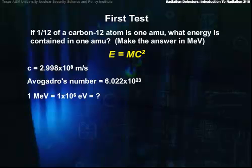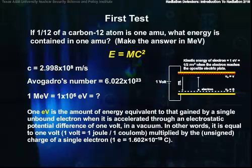Now what the heck is an MeV? Well, it's a million electron volts. What's an electron volt? An electron volt is the amount of energy that one electron gains falling through one volt of potential. That doesn't seem like a very big amount of energy, and it's not.